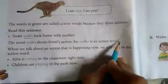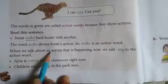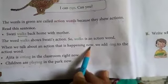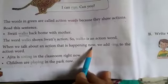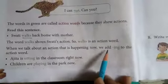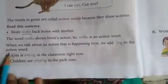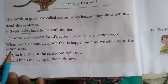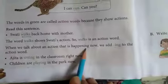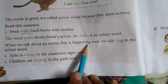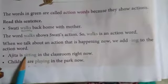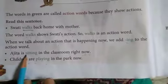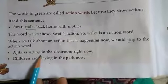When we talk about an action that is happening now — jab hum kisi action ke baare mein baat karein ki jo abhi bhi ho raha hai, present mein chal raha hai, abhi khatam nahi hua hai — we add -ing to the action word. Toh hum action word ke end mein -ing add kar dete hain, toh uska matlab ho jaata hai ki kaam abhi bhi chal raha hai, action abhi bhi ho raha hai.